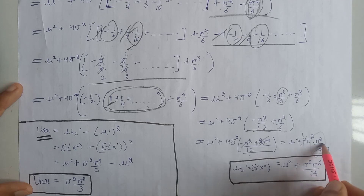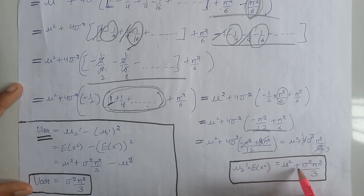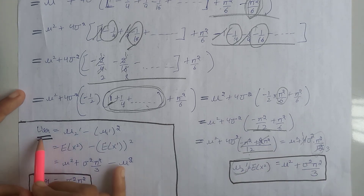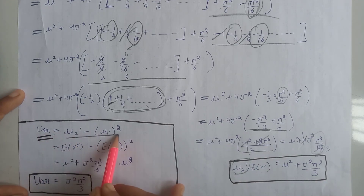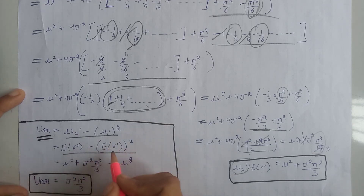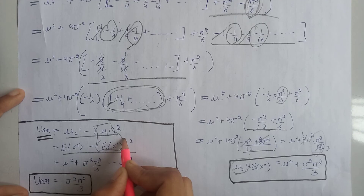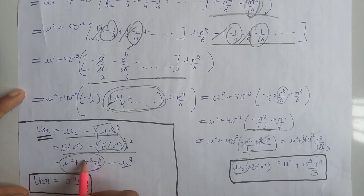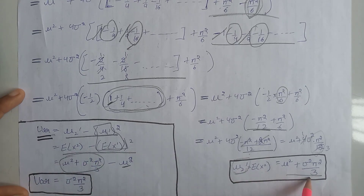Cutting 4 with 12, we get mu² plus sigma² multiplied by pi² divided by 3, as the answer for the second moment about the origin, that is E[X²]. Now we can calculate the variance, which in terms of moments equals mu₂ and in terms of expectations is E[X²] minus (mean)². The mean of the logistic distribution is mu, so we write mu² here, and substituting the value we just calculated, cutting terms gives the variance of the logistic distribution as sigma² multiplied by pi² divided by 3.